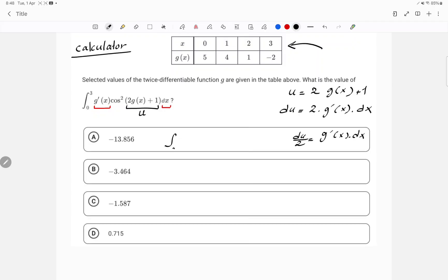So now I'm going to say I have integration from 0 to 3. Instead of g'(x)dx, I'll be putting du over 2. And I'm going to have cosine squared, and instead of the 2g(x) plus 1, I'll just put u. But now given that I have changed my expression to u, I must also change my limits of integration. So the 0 is no longer there, and 3 is no longer there. Now it's going to be a and b. Right now I have the task of finding those a and b.